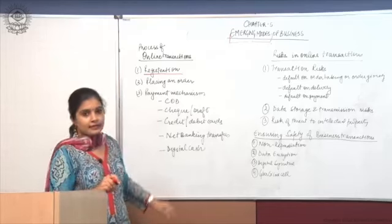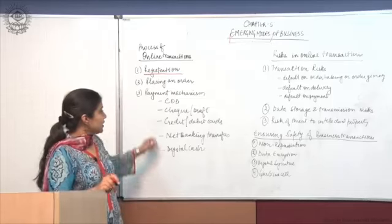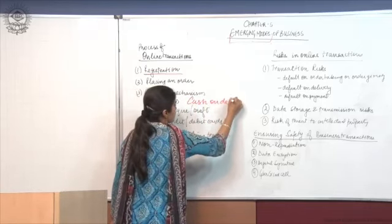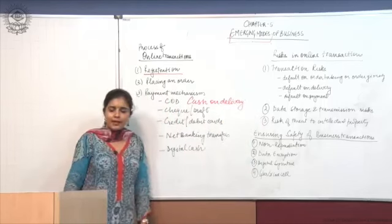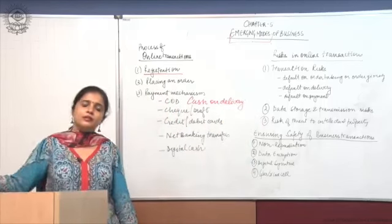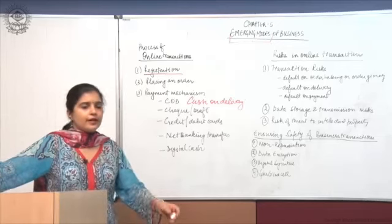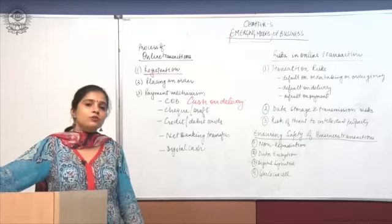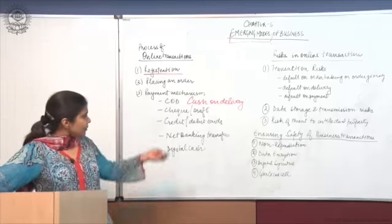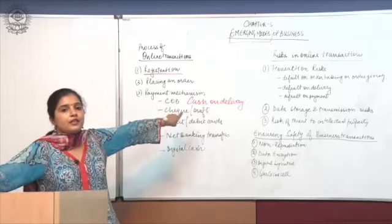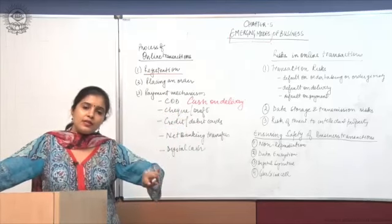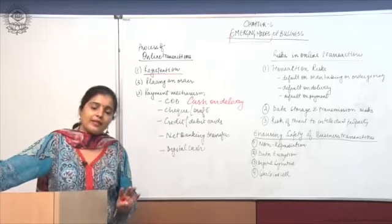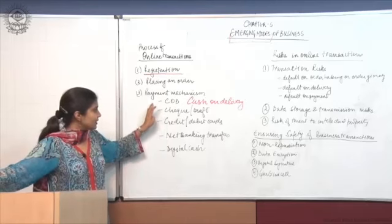Third is the payment mechanism — how do I want to pay. There are different options they are going to give you. One is COD, which is nothing else but cash on delivery. Because, as I told you, the buyer and seller are unknown to each other, they are always skeptical about going ahead with the transaction — that their debit card or credit card number will not be misused. So, just in order to overcome this demerit, cash on delivery has come up as a new payment mechanism. You can inspect the goods and then pay cash after being satisfied that this is what you ordered. This is one payment mechanism, one method of making the payment.